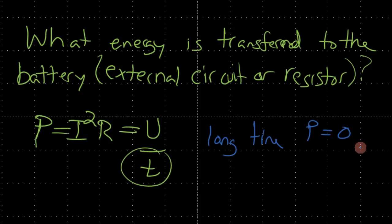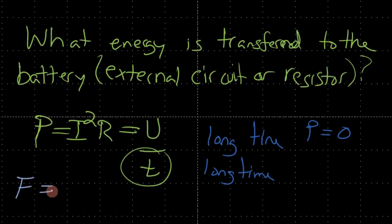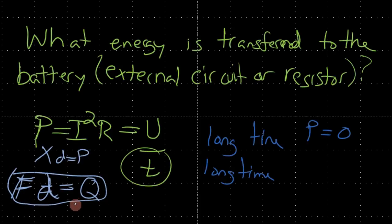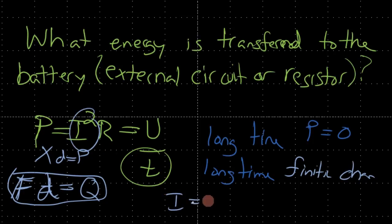Because the time is long, a finite charge is generated — the D constant relates the charge and the force applied on the piezoelectric material. Current equals charge over time, so if the time denominator is really long, the current is about zero. Which means I squared R is going to be close to zero.